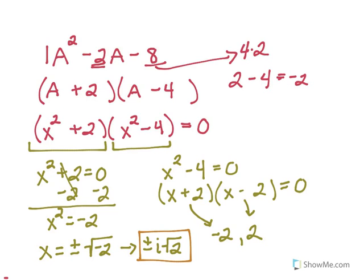So notice in this problem, if I were to set this equal to 0 and solve the solutions, I have four solutions, two of them being real and two of them being imaginary.